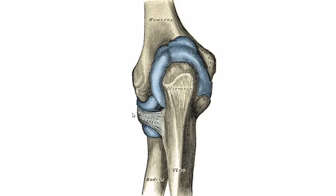Sometimes the radius can get forced out of this annular ligament, causing radial head subluxation. This is called nursemaid's elbow, because if you forcefully pull on the arm of a young child — as a nursemaid might do — you can sublux the radius from this ligament. It's more common in young children under the age of five.